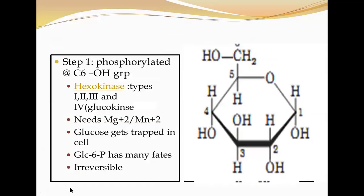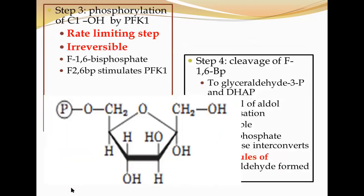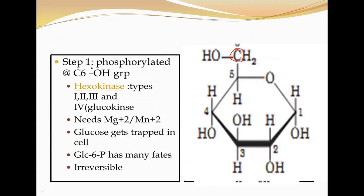Let us know certain features about this step. At the sixth carbon — CH₂OH — there is phosphorylation, and that phosphorylation gives you the first phosphorylated product: glucose-6-phosphate. The enzyme utilized is hexokinase, and there are basically four types of hexokinases: one, two, three, and four. The fourth hexokinase is also called glucokinase.